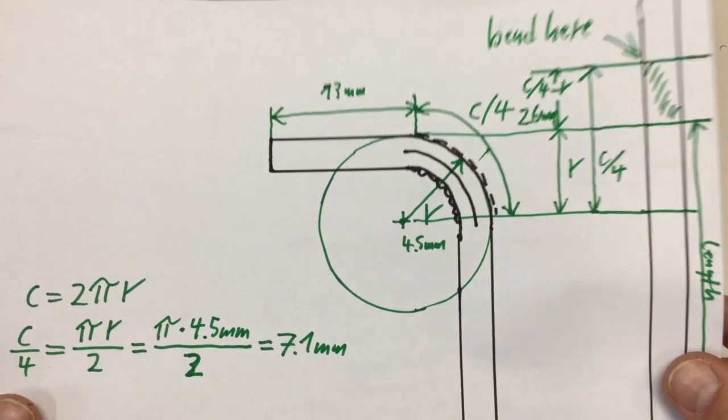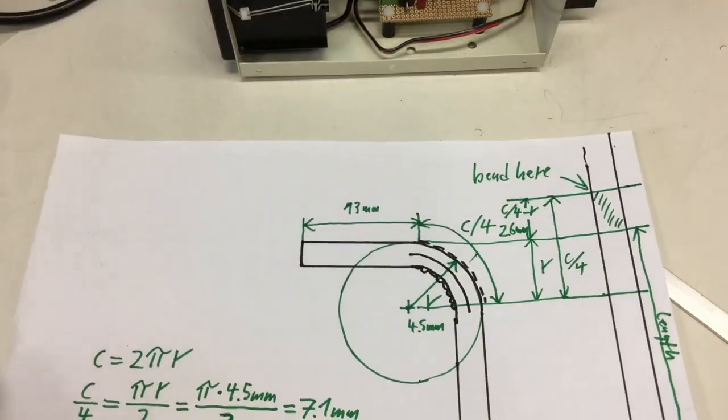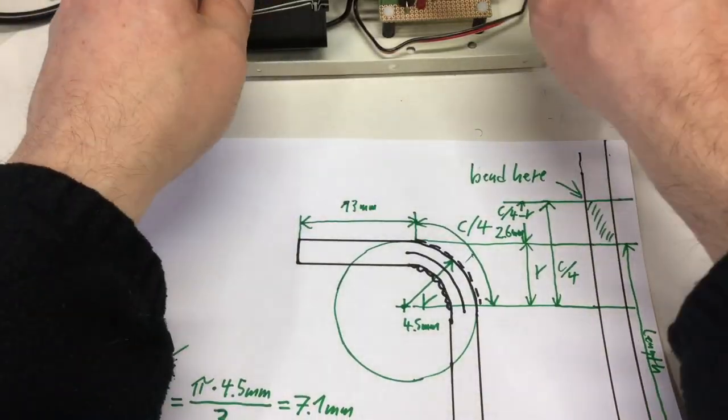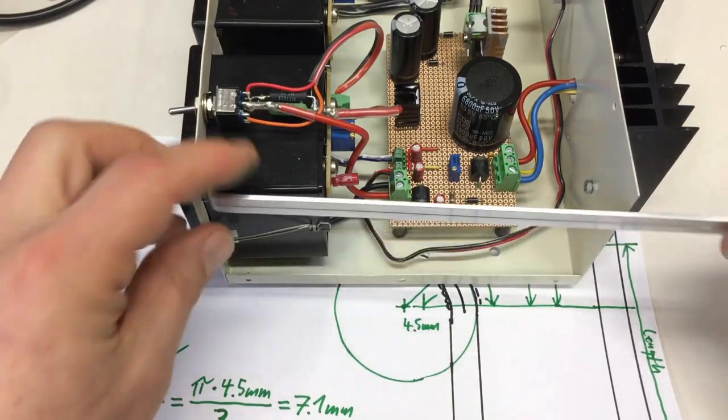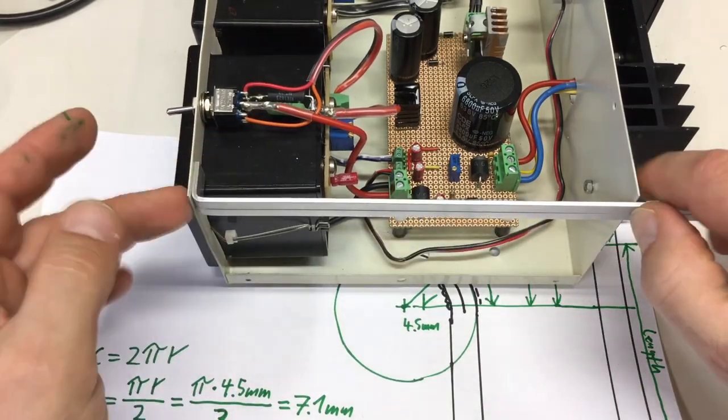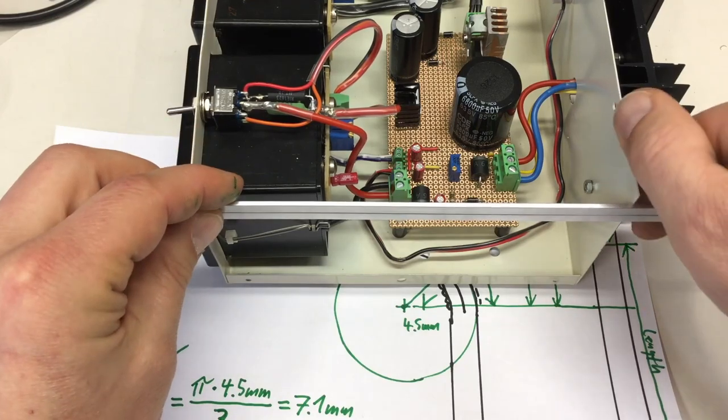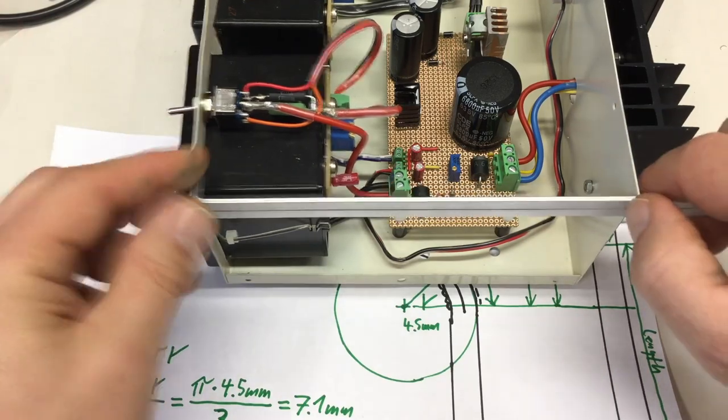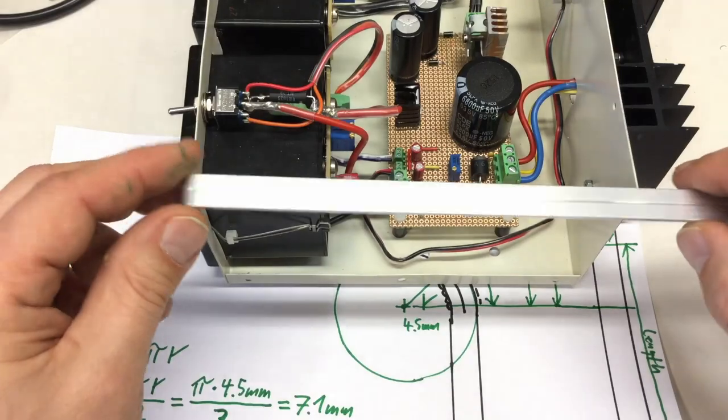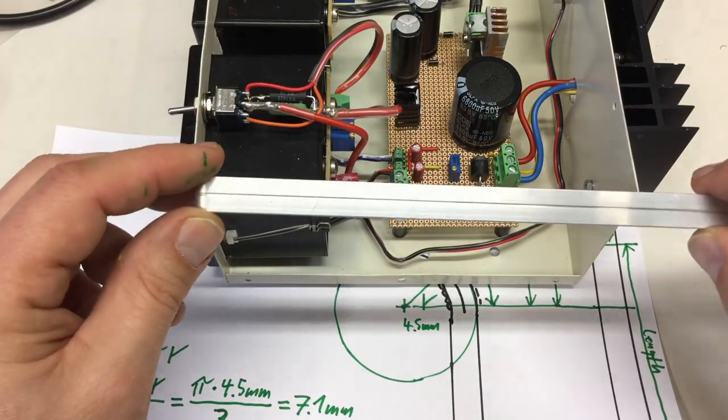So instead of going with the great theory, my theory of bending, let's go with the stuff I measured. Take 2 millimeters, maybe even less, because as I said, if it's too long and not fitting in I have a problem. If it's a little too short, I can still shim something in. Okay, I'll come back to you when I'm done.